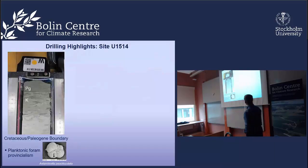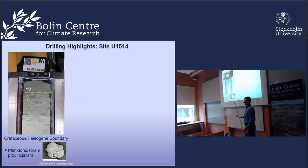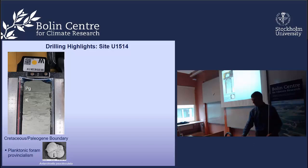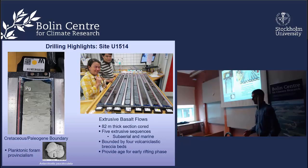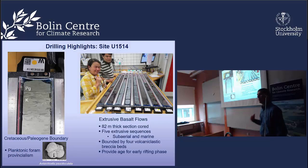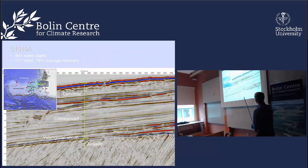We got our Pseudoguembelina loculata — an early Danian marker species described from New Zealand — just above the Cretaceous-Tertiary boundary extinction. The boundary level is constrained by planktic foraminifera and calcareous nanofossils with a bit of bioturbation, but it's a very complete boundary. We also recovered basalts fresh enough that we should get very good radiometric dating to determine the age of when those basalts erupted. Some of those basalts were red-colored, meaning they were subaerial — erupted above sea level.